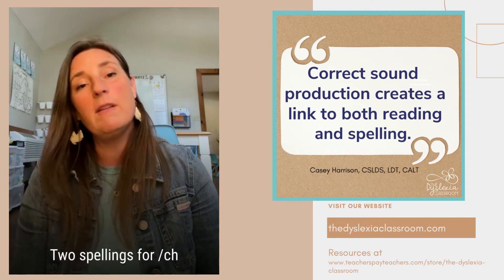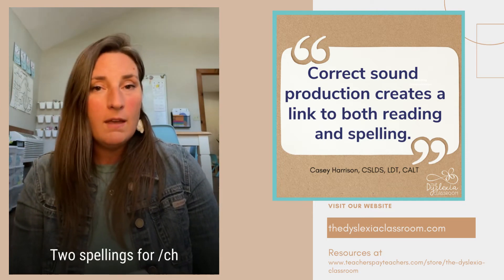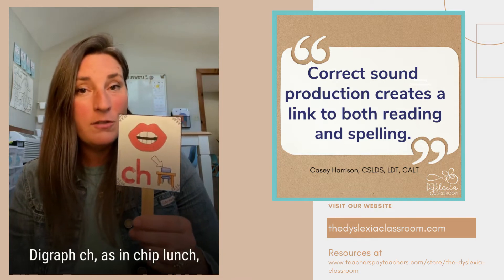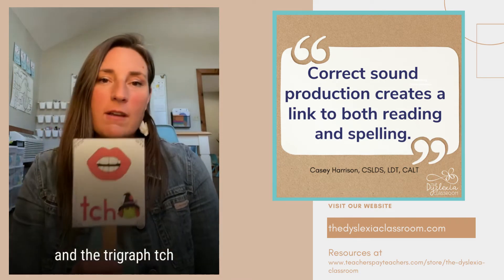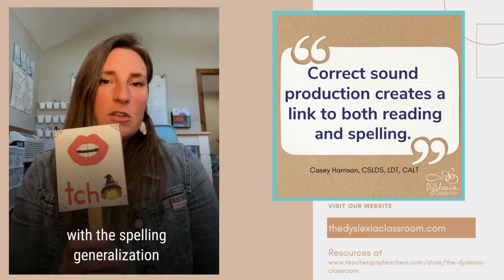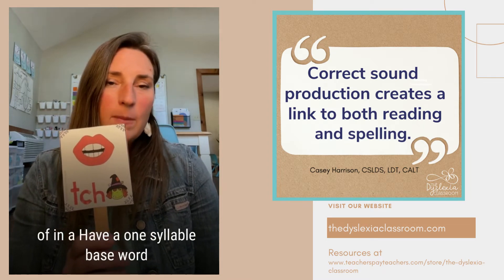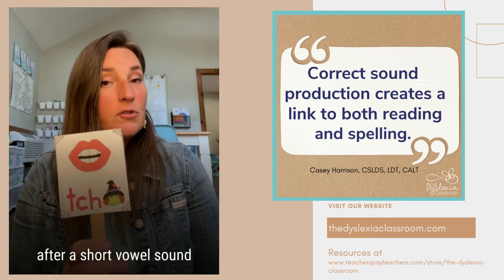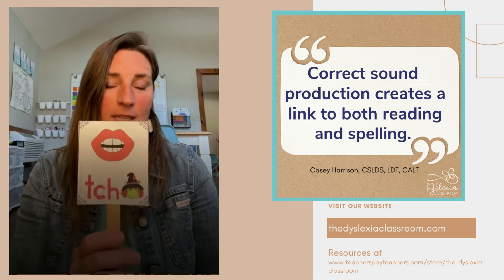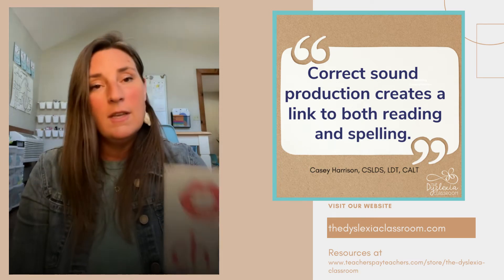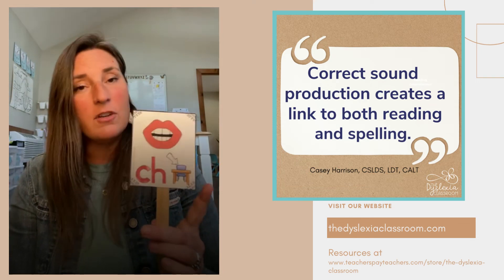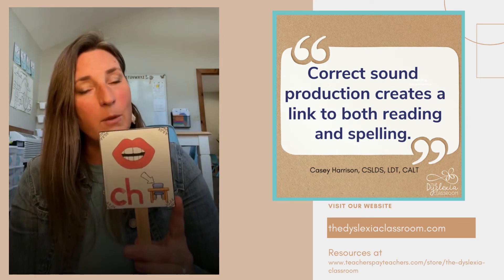There are two different spellings for the ch sound. We have the digraph ch as in chip, lunch, and chair. Then we have the trigraph tch. The spelling generalization is: if we have a one-syllable base word and you hear ch after a short vowel sound, then ch is going to be spelled with the trigraph tch, as in match and winch. Final ch can also be spelled with the digraph ch after a consonant sound, long vowel sound, or vowel pair.